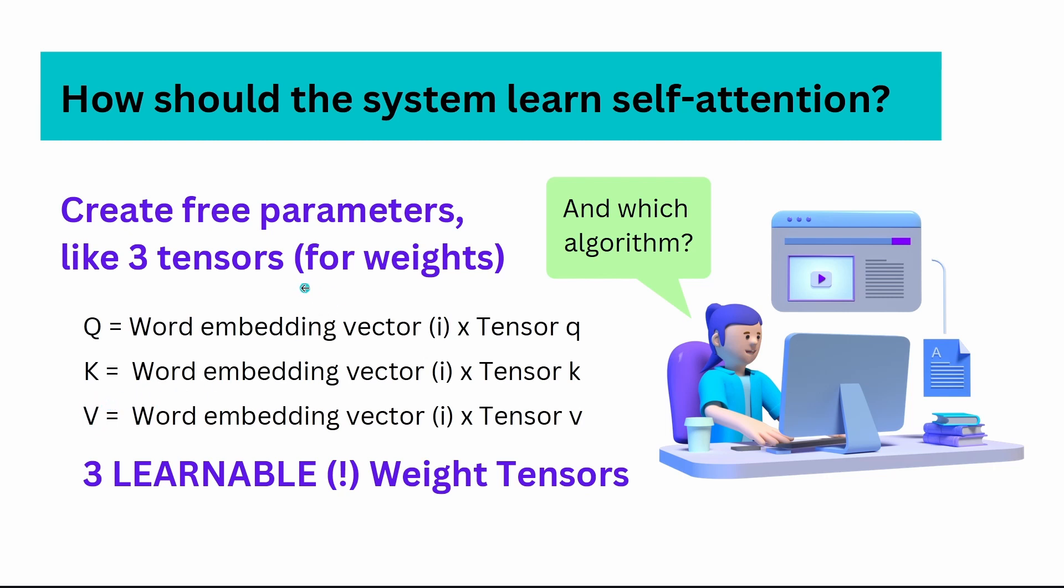What we have is only word embedding vectors. Remember I showed you before, word2vec, we had this non-context-aware word embedding vectors. Now we have word embedding vectors, and now we simply construct our tensors. So we have three learnable weight tensors. Three parameters I can play around with, I can learn, I can optimize.